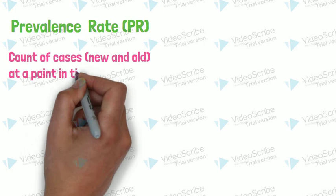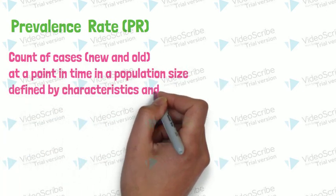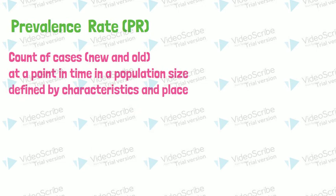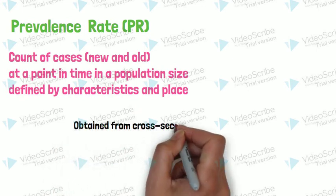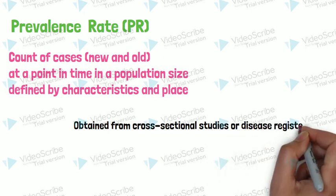The prevalence rate is obtained from cross-sectional studies or disease registries. The formula of prevalence rate will be all cases, that is new and old cases, over population at risk times by 100.